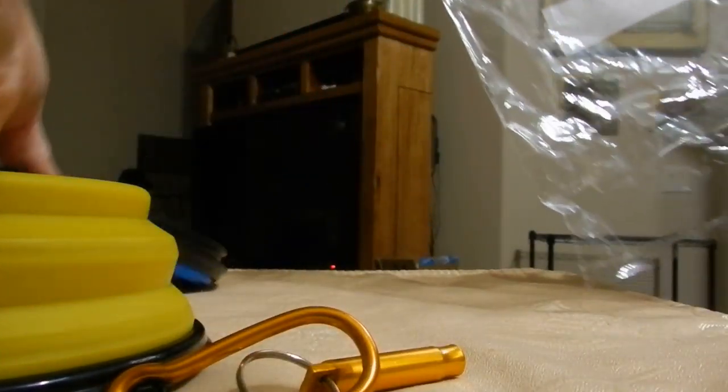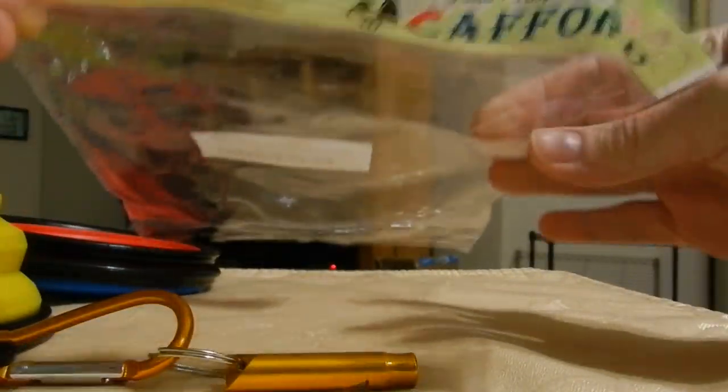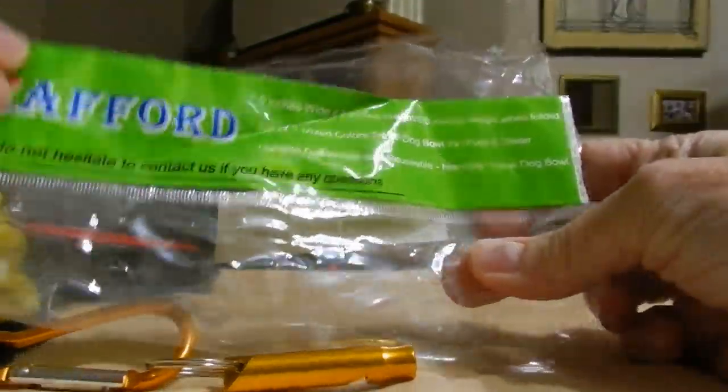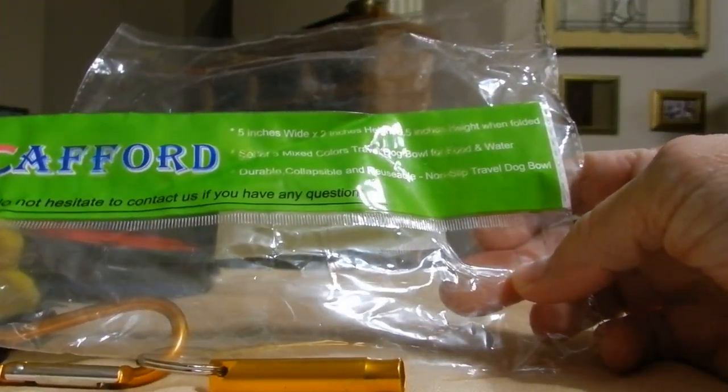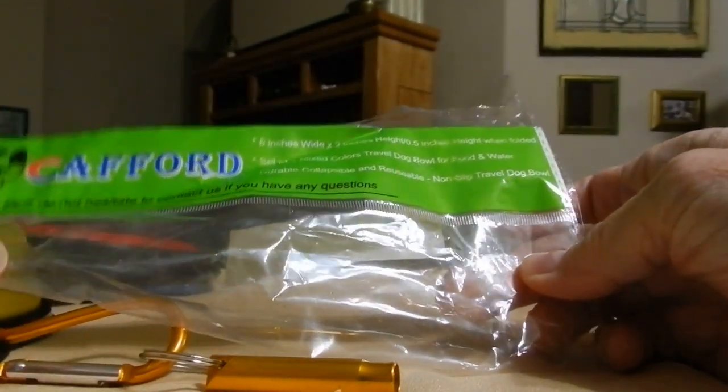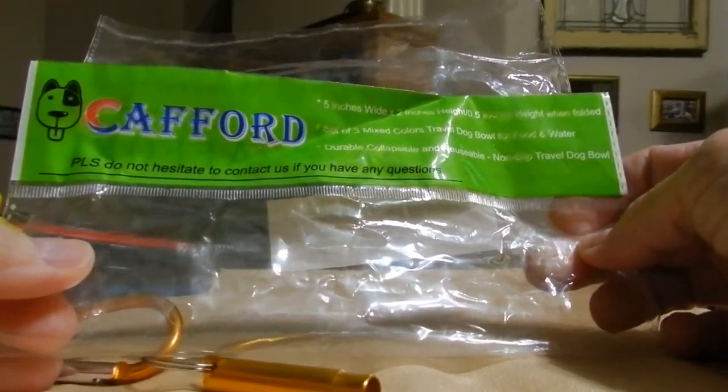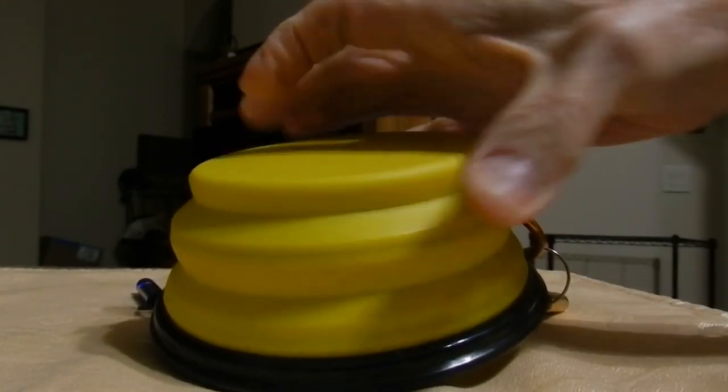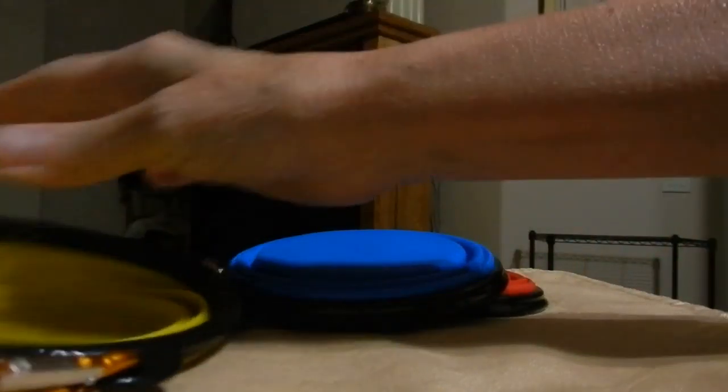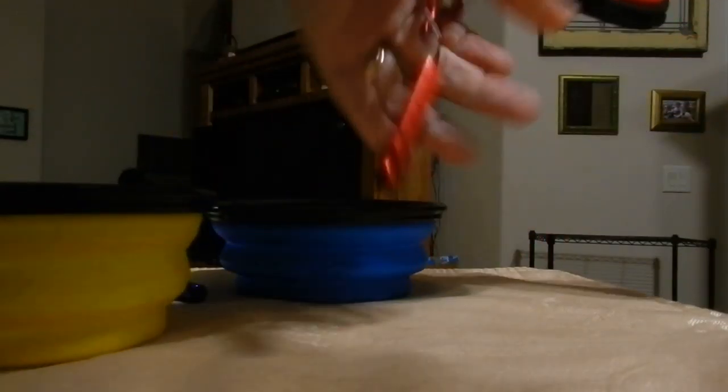This video shows what comes in the package for the Colapz 5-inch wide by 2-inch high collapsible dog travel bowls. I'd like to give you a demonstration, show you how they work, and show you the dimensions.